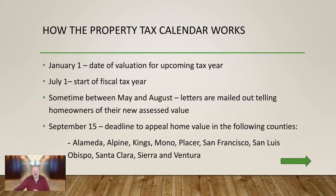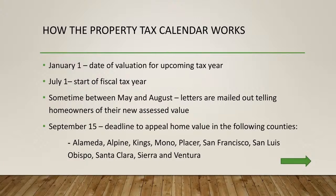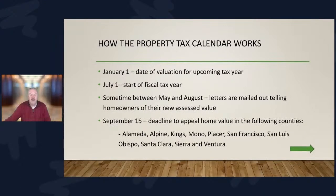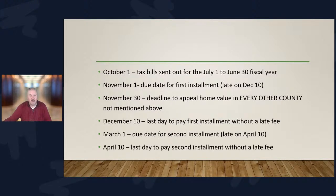There are 10 counties in which that deadline is September 15th. The ones local to us — Alameda County, Placer County, San Francisco, and Santa Clara counties — have only until September 15th to appeal your property taxes.